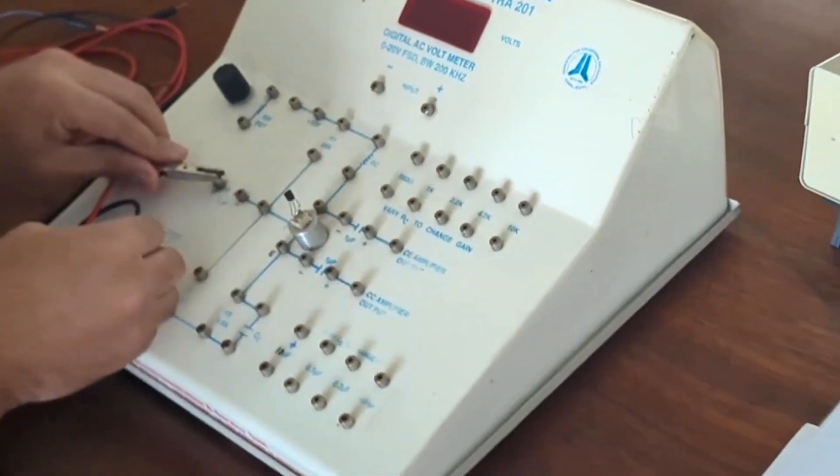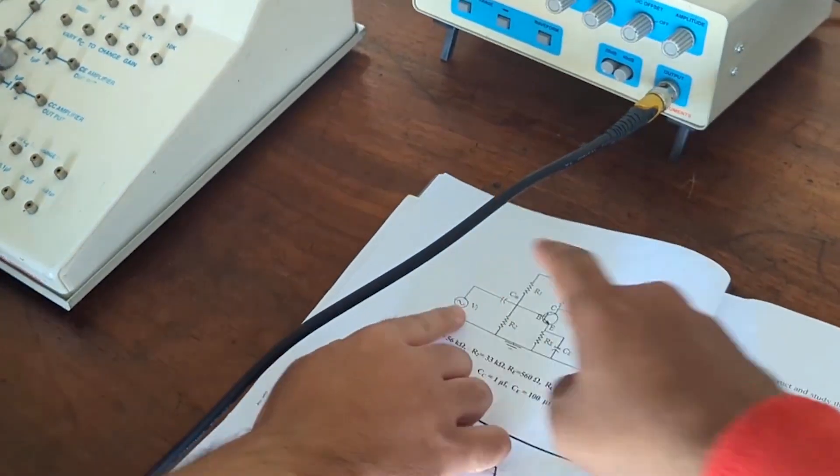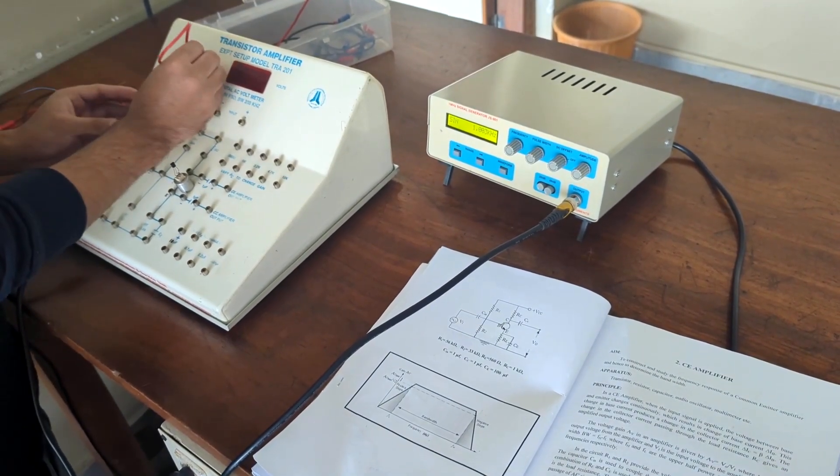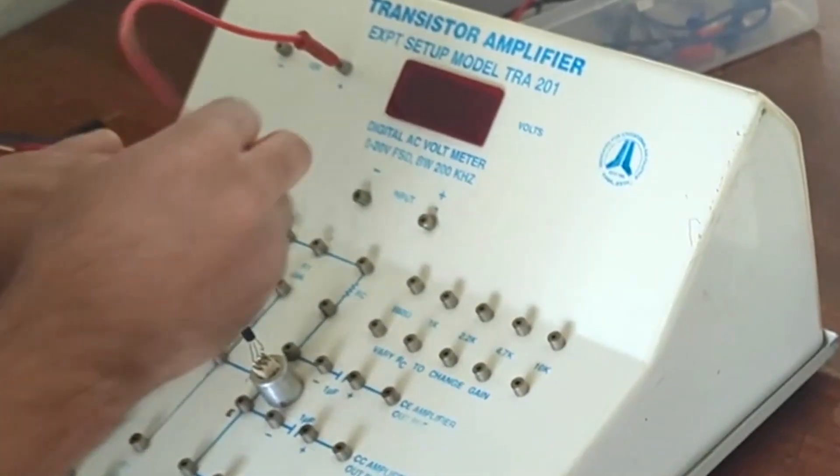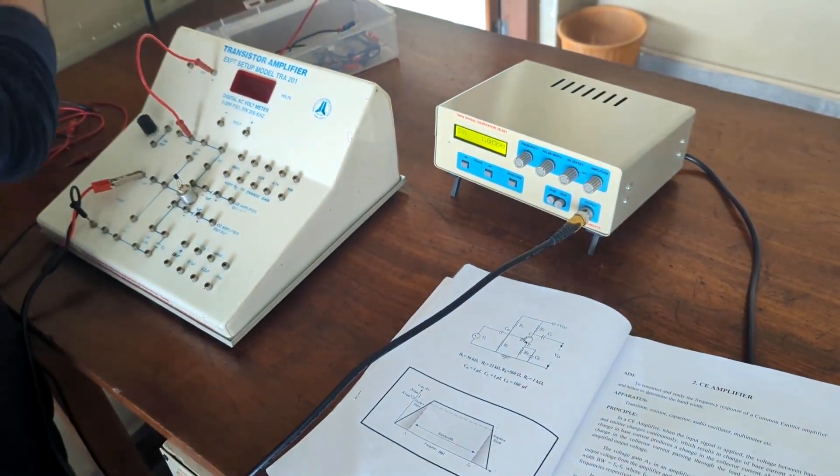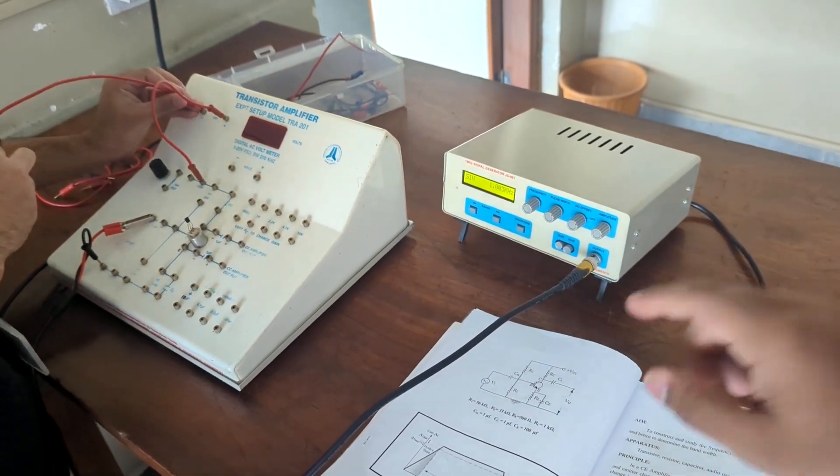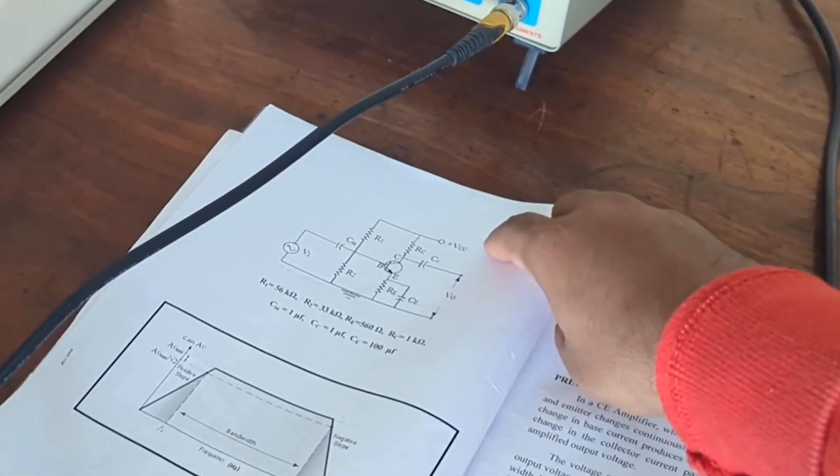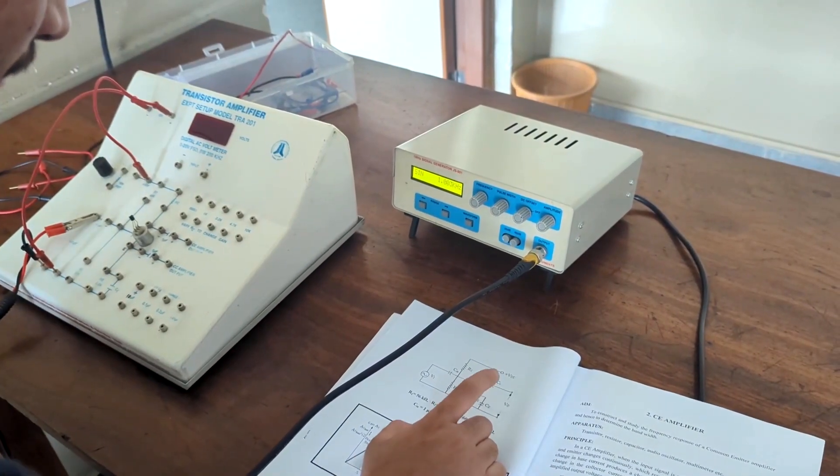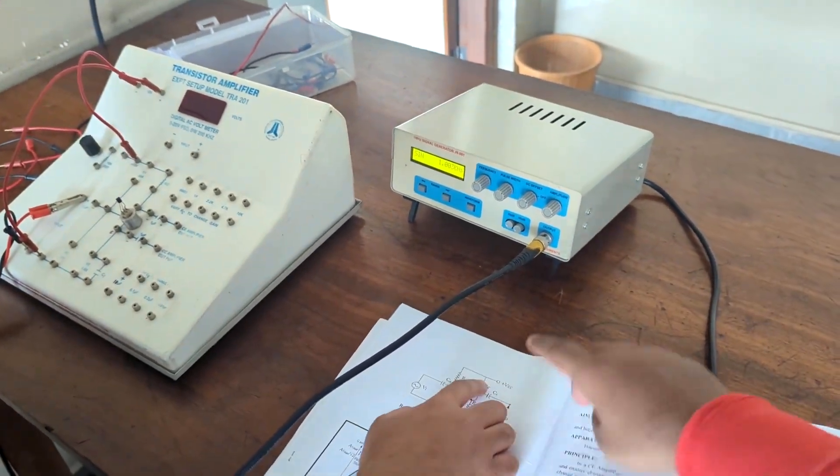So the source negative is not given here, but it's understood that the source negative has to be ground. Connecting RE. So sorry, RC. Output here. Connecting RC.